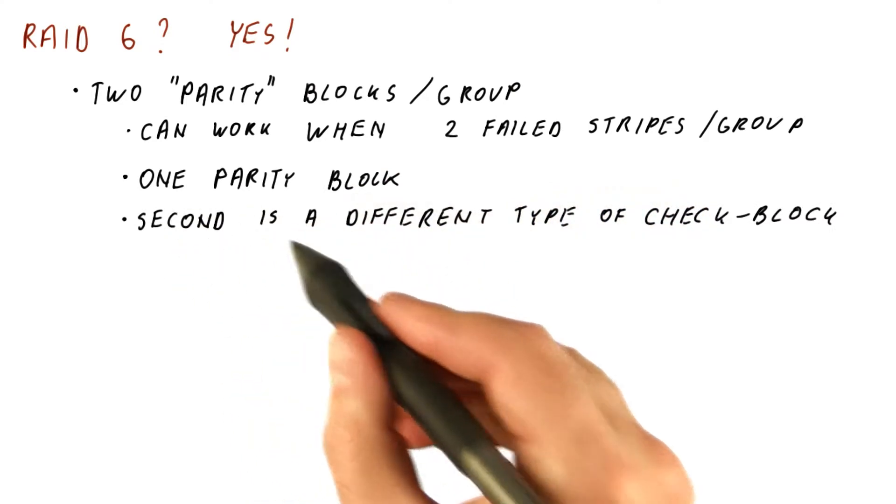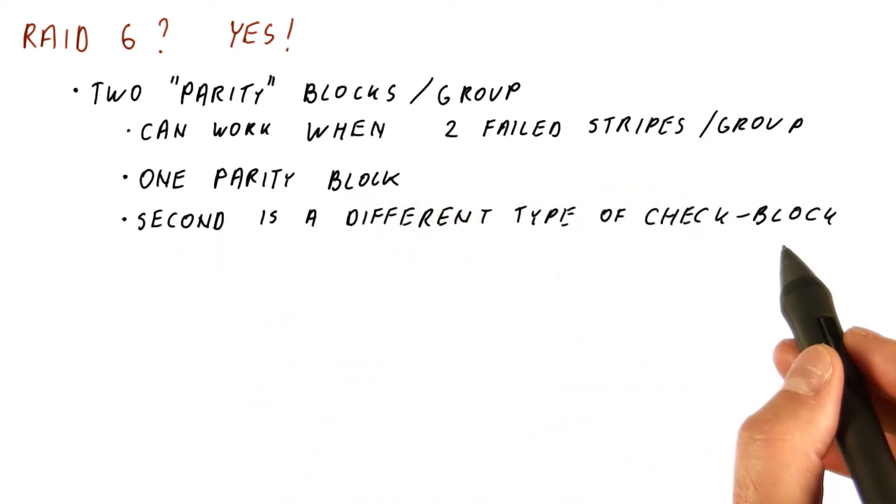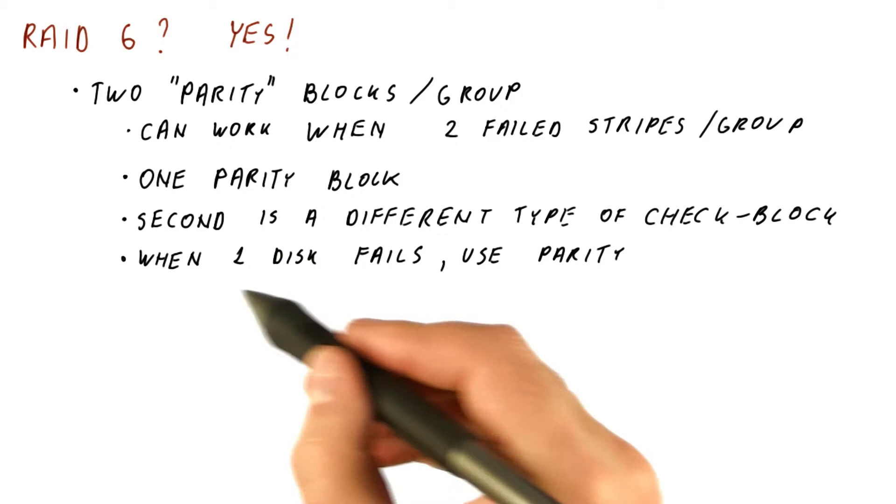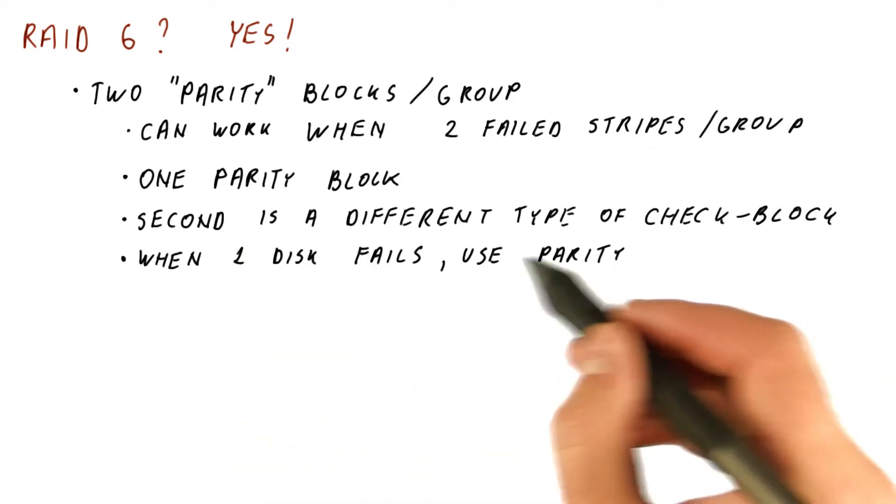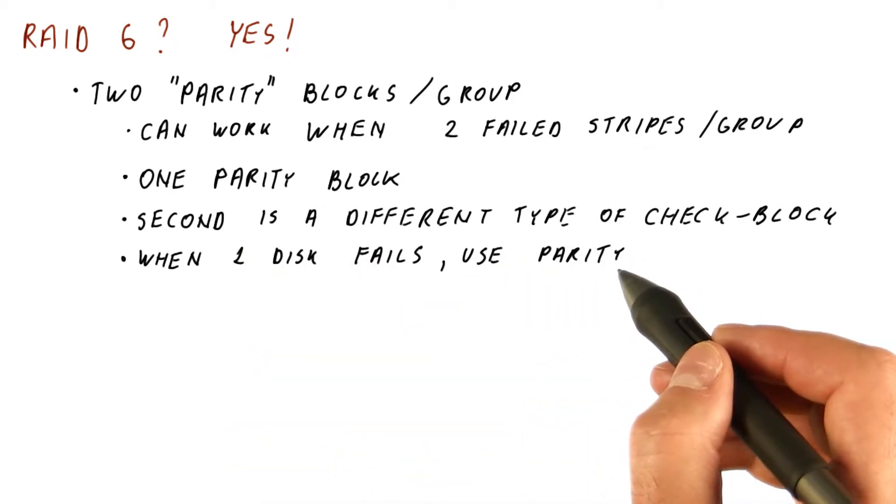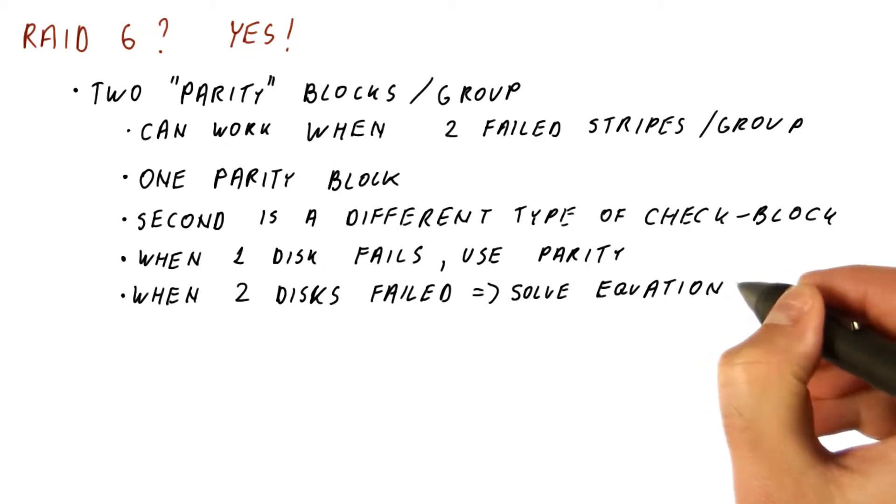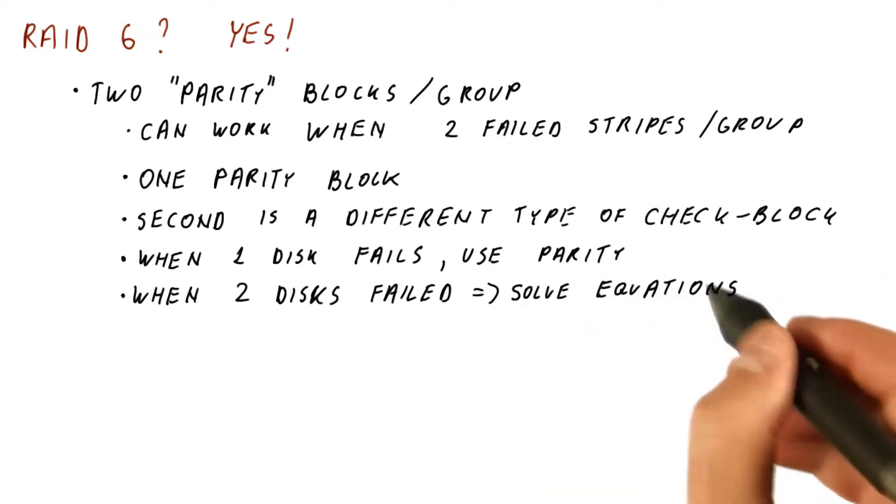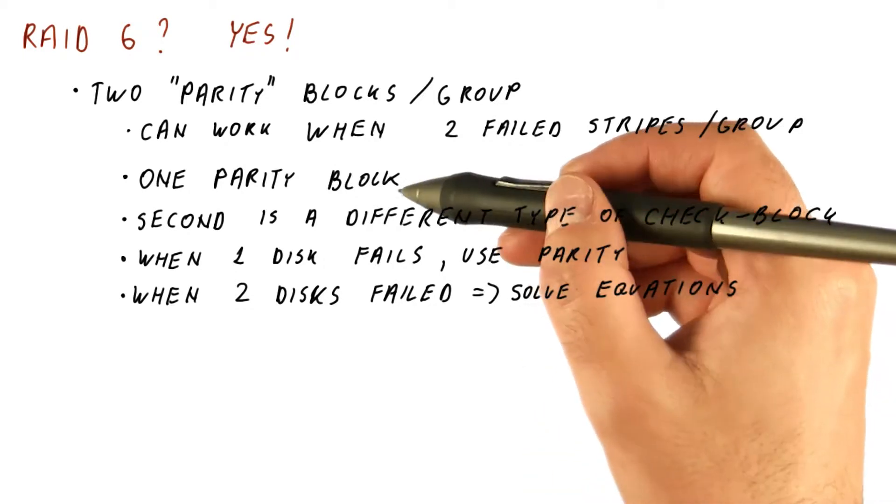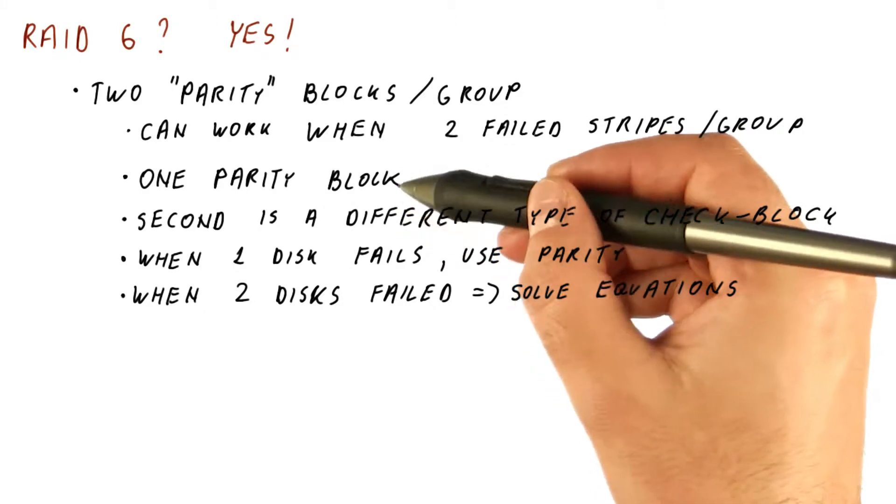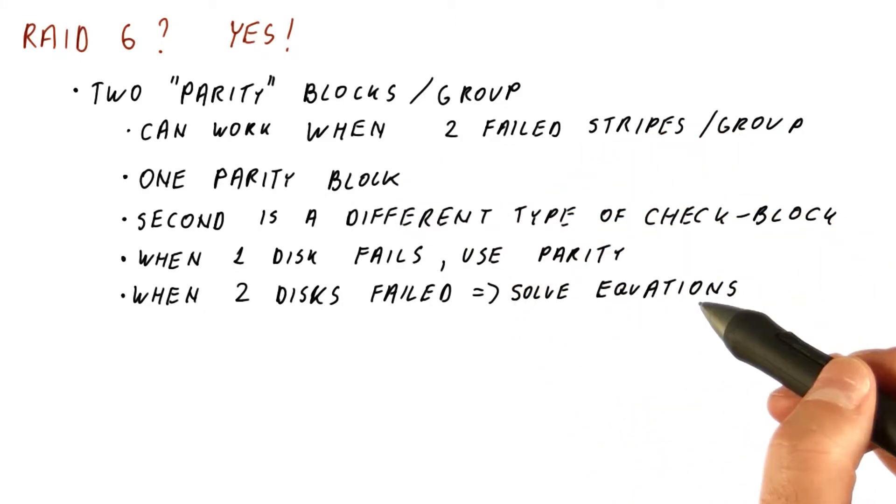The second of the two blocks is a different type of check block. When only one disk has failed, we use the parity to recover. But when two disks have failed, we can still solve some equations where the data and the two types of check blocks figure, so that we can still recover the content of the two failed disks.